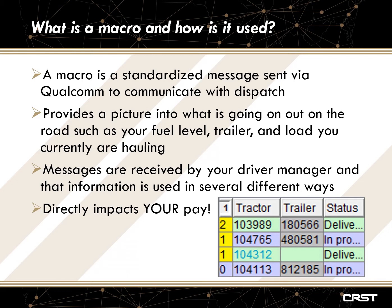Once those have been read and confirmed by a driver manager, they disappear. You will also see the status bar. What that status bar shows is whether or not a truck is in progress under a load or if they are currently in a delivered status, meaning that they are not in progress to go pick up a load or under a current load. Our planning department uses this to get your next load, so it's very pertinent that we have you shown in an in-progress or delivered status, depending on what your next need is.